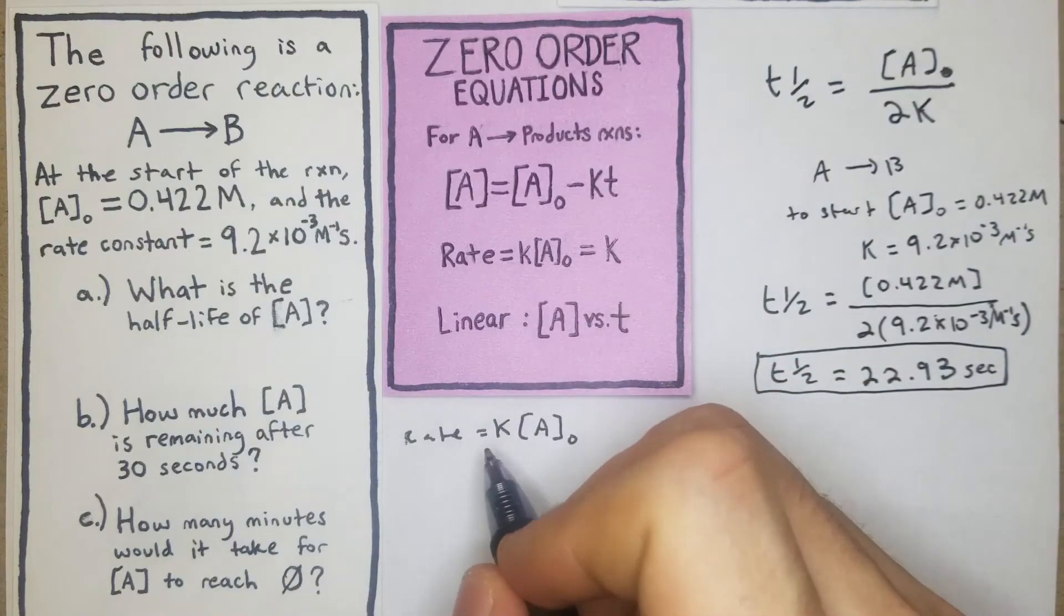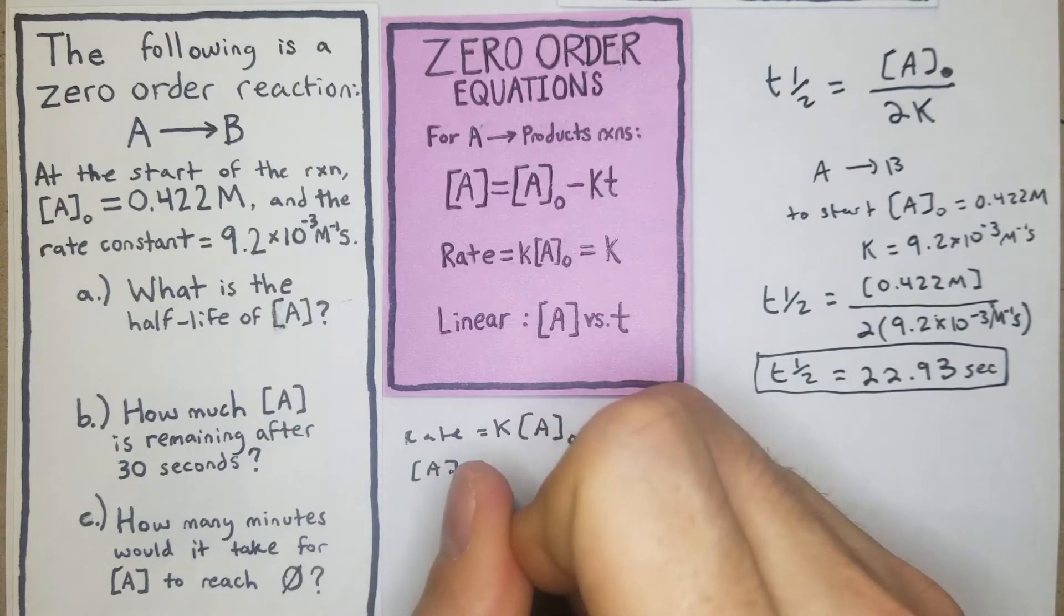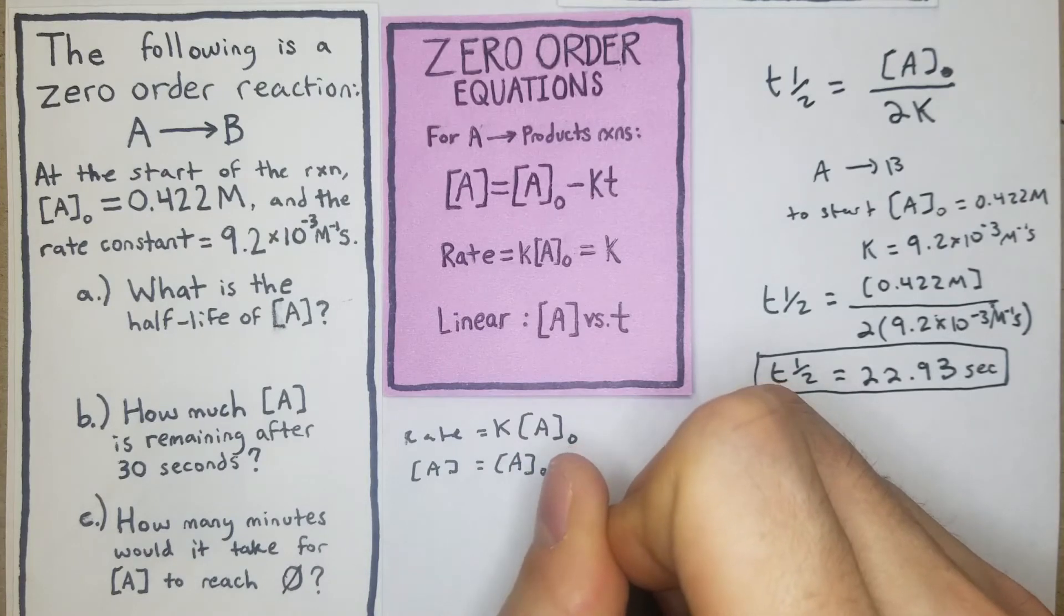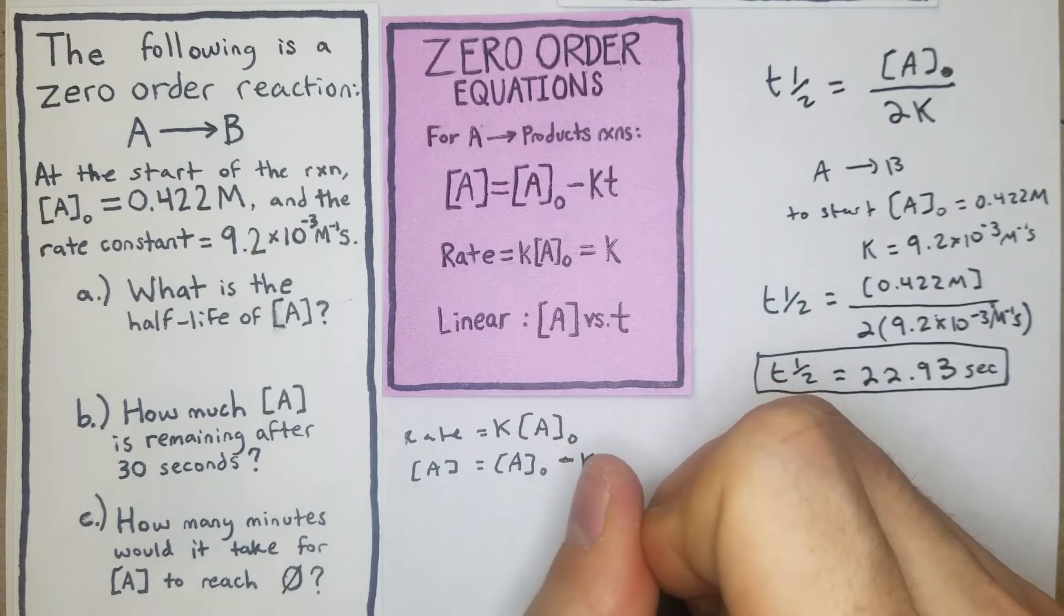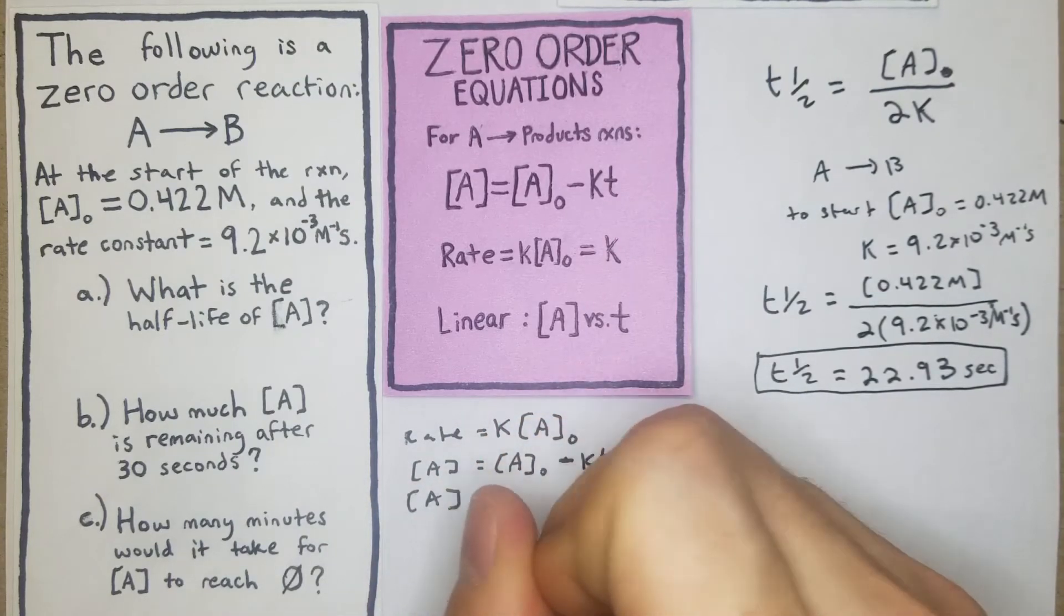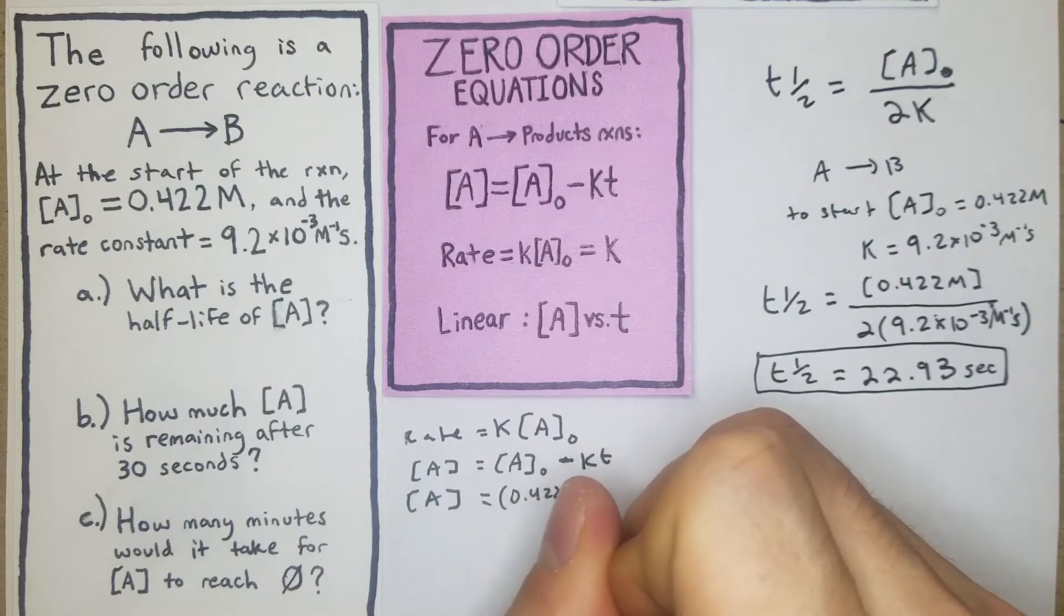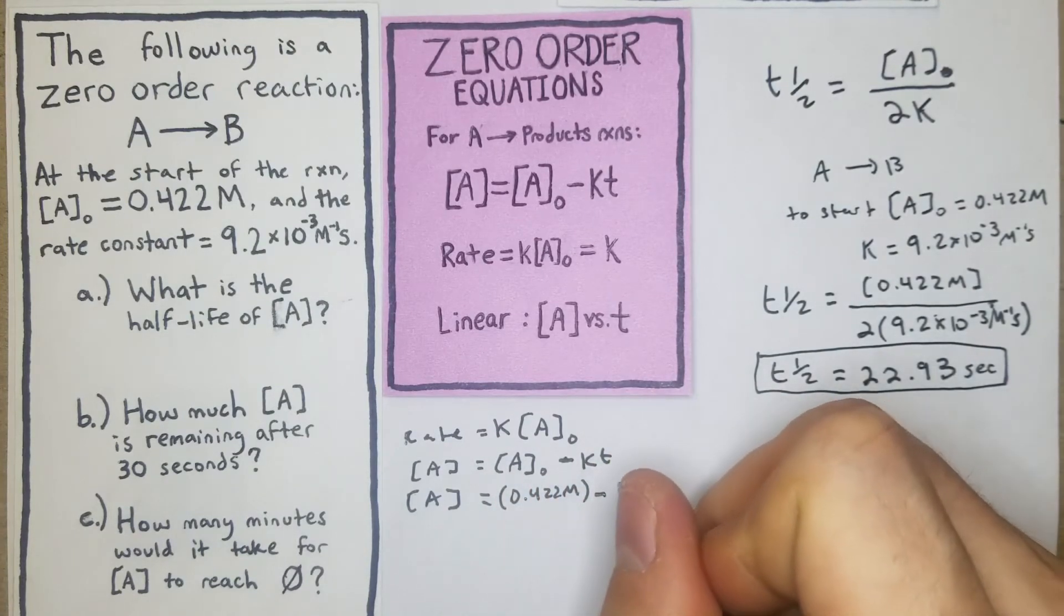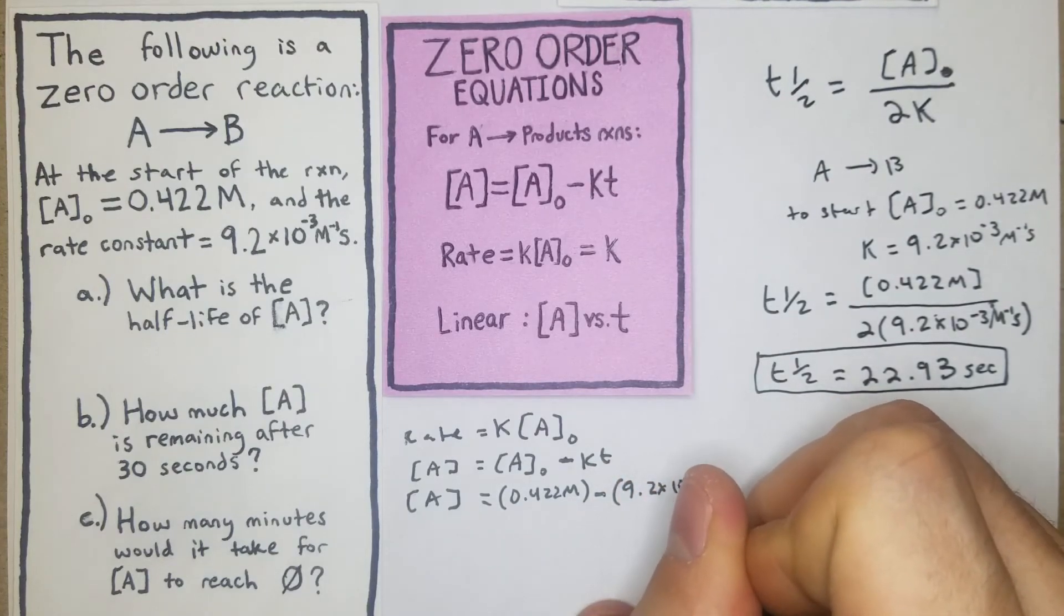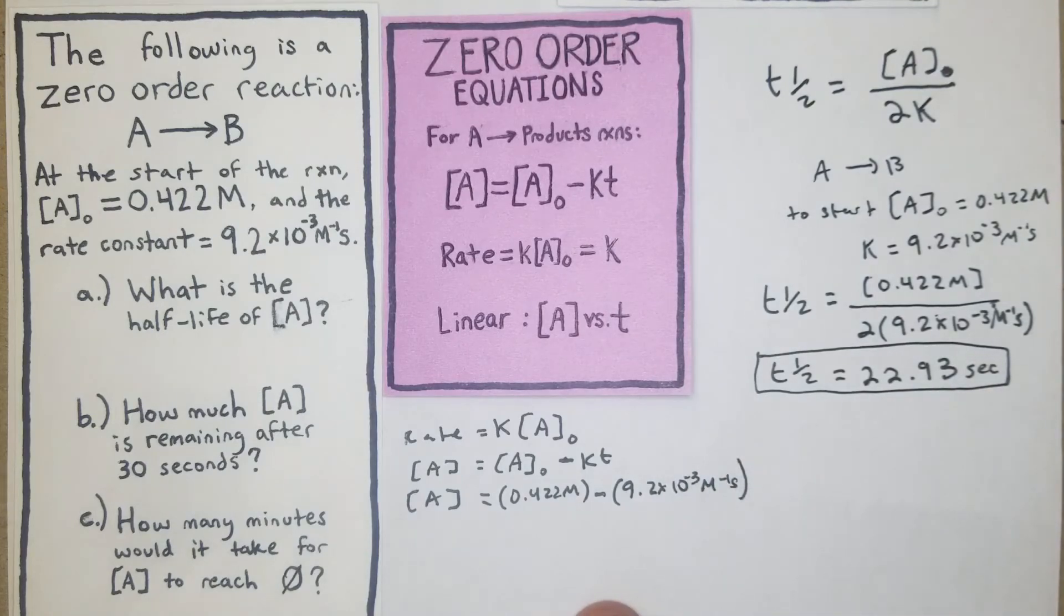Our rate is, in this case we're going to use that and we have [A] is given to us. [A] is equal to [A]₀ minus Kt.